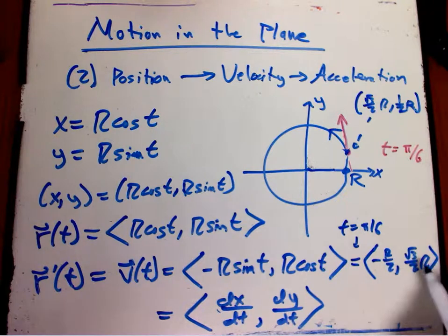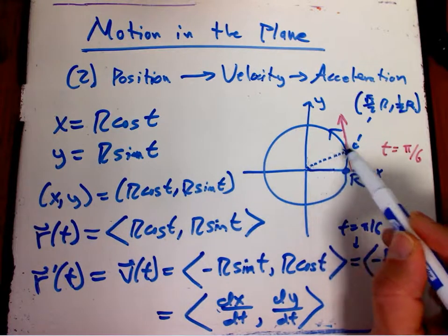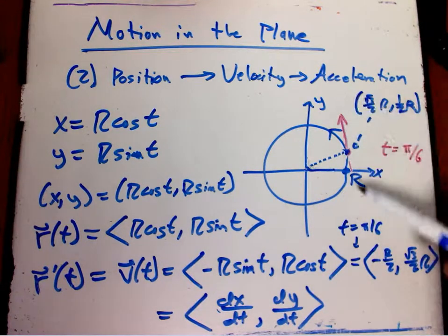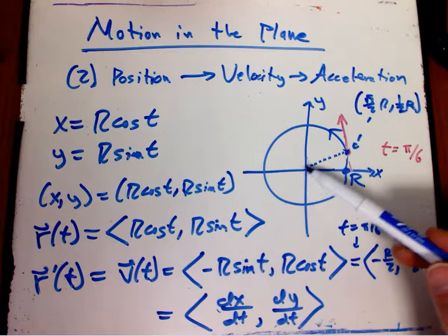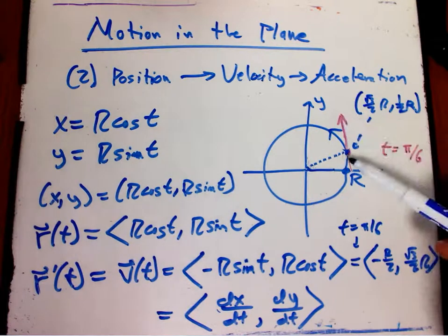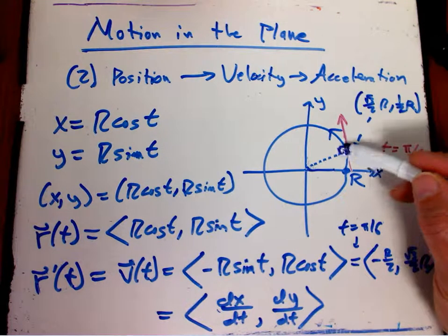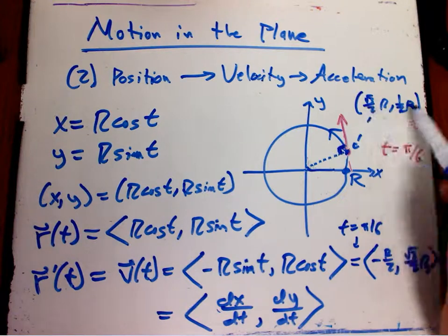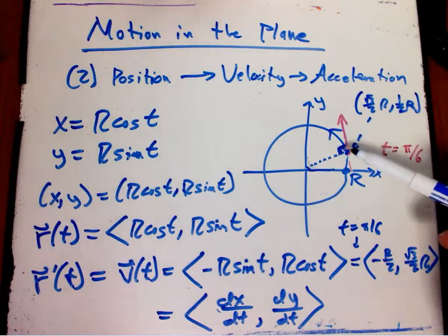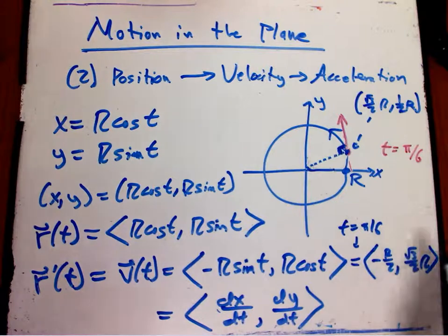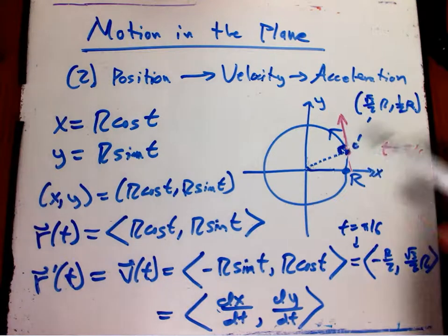So they just switch and one goes minus. And one thing you should note is that there's a classic thing about the tangent vector to a circle and the radial vector to a circle. Those should be orthogonal to each other. They should be perpendicular. And it's true that if you take a vector and you flip its components and put a minus sign on it, they will end up being perpendicular to each other. You can see it's going left and up, and it's going more up than it's left in this particular case.